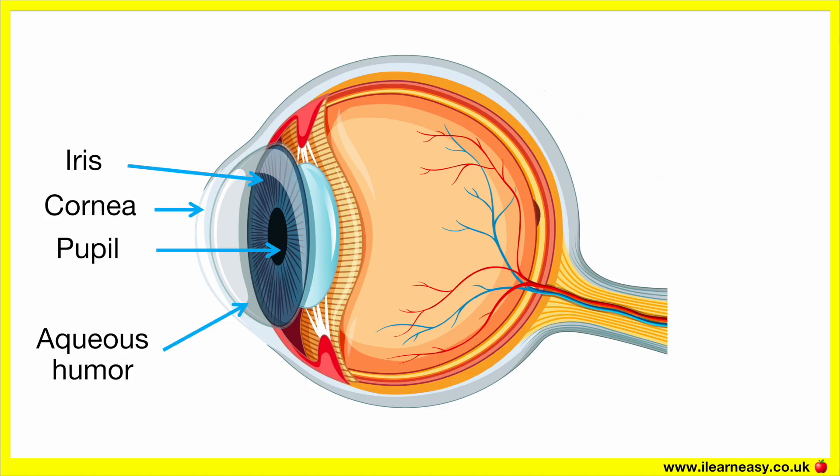The iris contains circular muscles and radial muscles. Circular muscles contract to make the pupils smaller — this occurs in bright light. Radial muscles contract to make the pupils larger — this occurs in dim light.